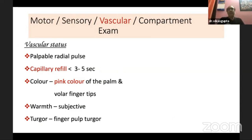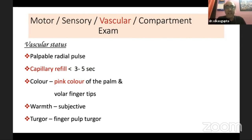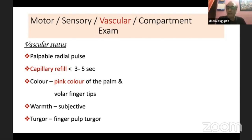Vascular examination is an essential part of supracondylar fracture assessment, because 20% of fractures are associated with some kind of vascular compromise. It is not only the palpable radial pulse — you should also check capillary refill, which should be less than 3 to 5 seconds, the color of the palm and fingertips, the warmth of the hand, and the turgor of the finger pulp.